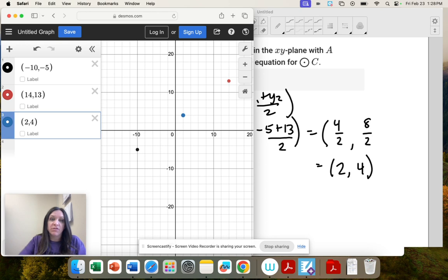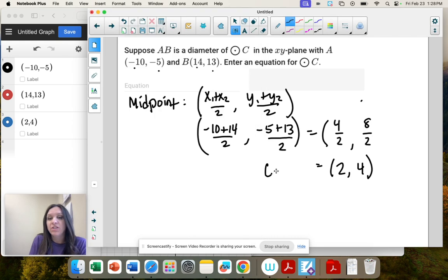So see how that point is right in the middle of our other two? That's the center of our circle. So 2, 4 is our center.